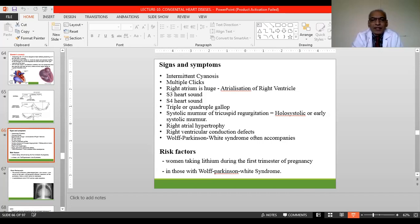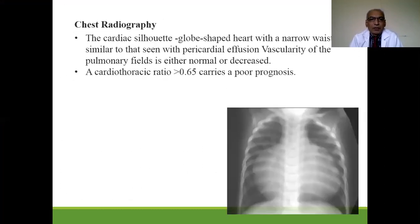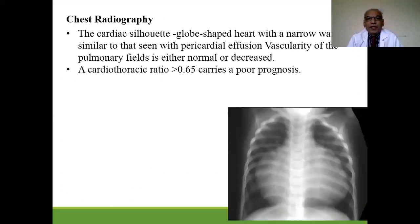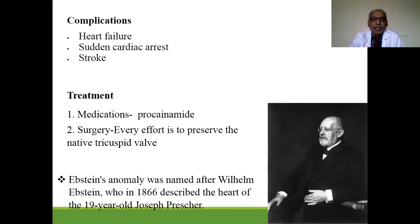Risk factors include maternal lithium treatment in the first trimester and Wolff-Parkinson-White syndrome. Chest X-ray is typical — globe-shaped heart with narrow waist resembling pericardial effusion, with pulmonary fields showing decreased or normal vascularity. ECG shows Himalayan P waves and low amplitude QRS complex. Treatment includes procainamide and surgery.